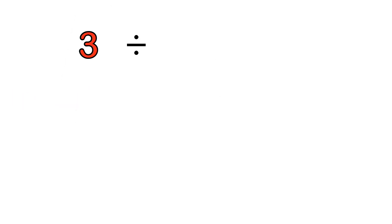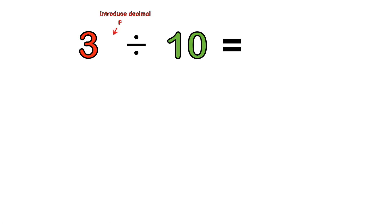How would you divide 3 by 10 without a calculator? It's actually easier than you think. Just take note of what we are dividing — a whole number by 10, 100, or 1000. If we have a whole number and no decimal point, we first must introduce the decimal point at the end of the number. Step one: introduce the decimal point. Step two: count how many zeros we have and make that many jumps to the left accordingly.